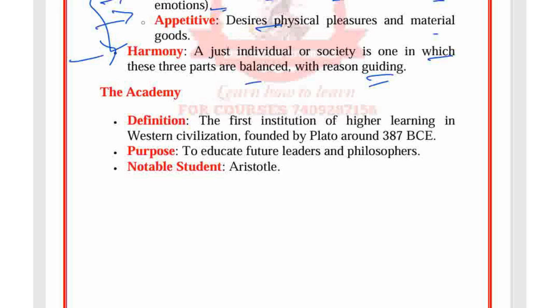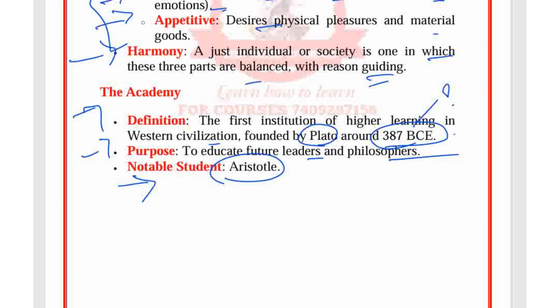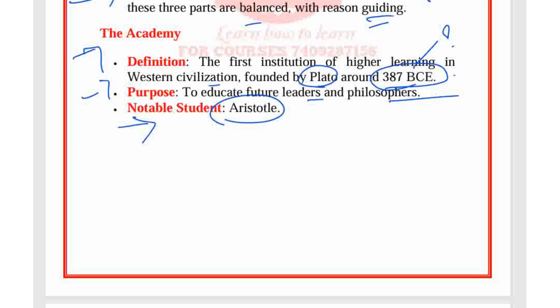The Academy was the first institution of higher learning in Western civilization, founded by Plato in 387 BCE. Its purpose was to educate future leaders and philosophers, and its notable student was Aristotle.